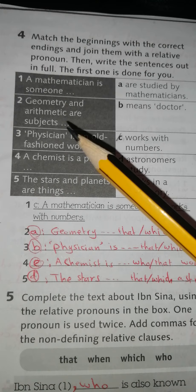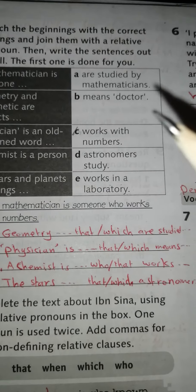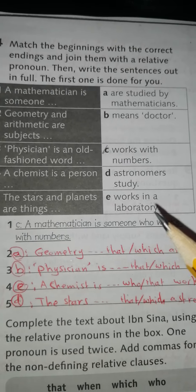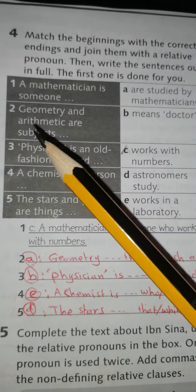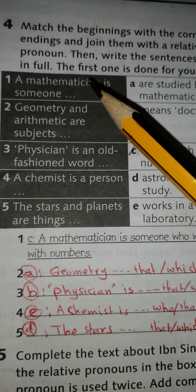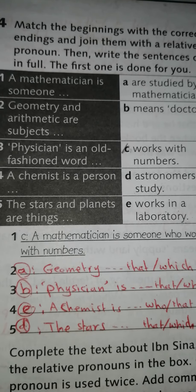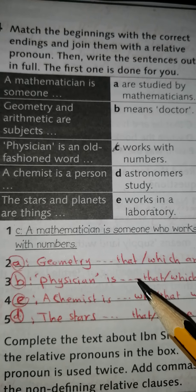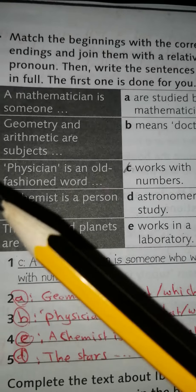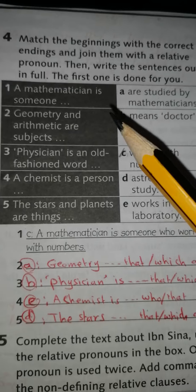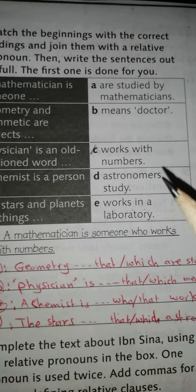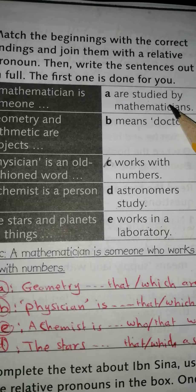Number two: Geometry and arithmetic are subjects. Geometry and arithmetic هي عبارة عن جزء من الرياضيات. بنحكي subjects، فرح أستخدم إما which أو that، لأنهم أصلاً كلهم عبارات وصل معرفة ما عندي فواصل.